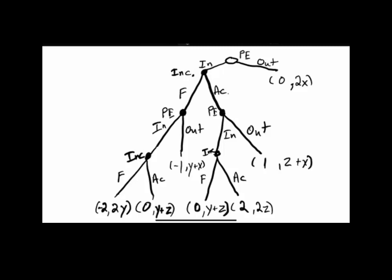Now we solve using backward induction — we first solve for the subgames from the bottom. Starting at the bottom right subgame, the incumbent could fight or accommodate, looking at a payoff of Y plus Z or 2Z. From our problem we know Z is greater than Y, which means 2Z is greater than Y plus Z, so the incumbent would accommodate. On the bottom left side, the incumbent could fight for 2Y or accommodate for Y plus Z. Since Z is greater than Y, again the incumbent would choose to accommodate.